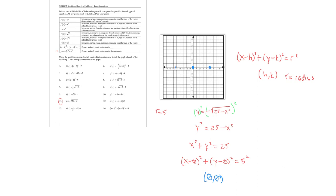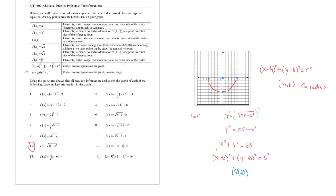The center is (0, 0) and radius is 5. The semicircle extends from x = -5 to x = 5 and dips down to y = -5. The three key points are (-5, 0), (5, 0), and (0, -5). Domain is [-5, 5] and range is [-5, 0], since we only have the bottom half of the circle.